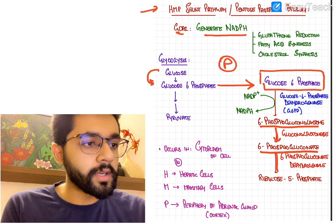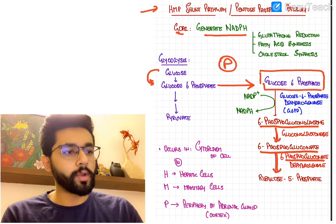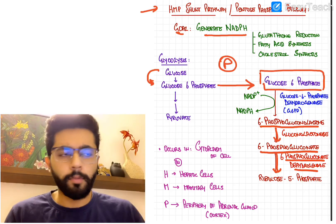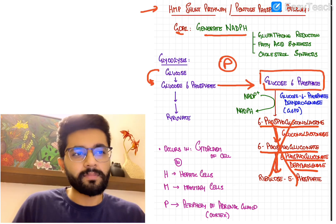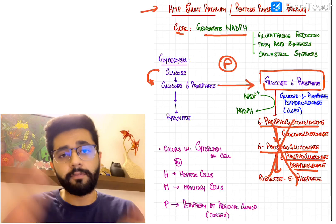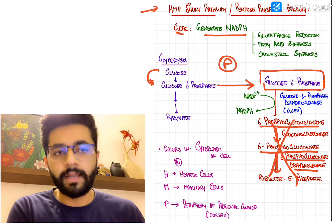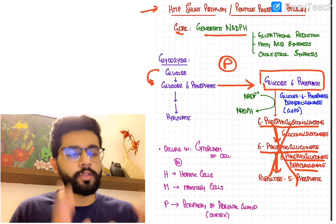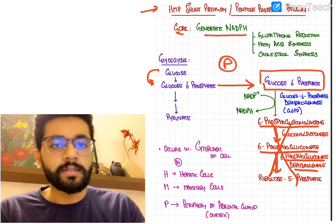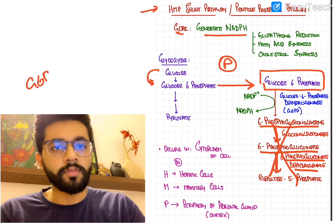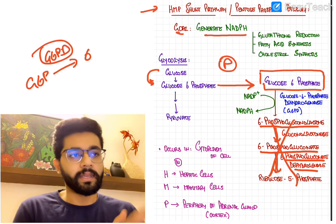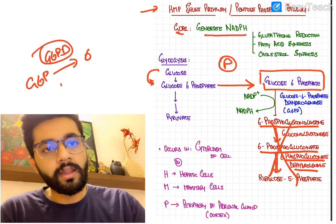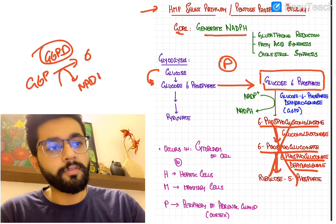6-phosphogluconolactone is then converted to 6-phosphogluconate by gluconolactonase, which is then converted to ribulose 5-phosphate by 6-phosphogluconate dehydrogenase. From a NEET point of view, only the first step is important — focus on the rate-limiting steps. The key step is the dehydrogenation of glucose 6-phosphate to 6-phosphogluconolactone by G6PD, which is also the rate-limiting enzyme.